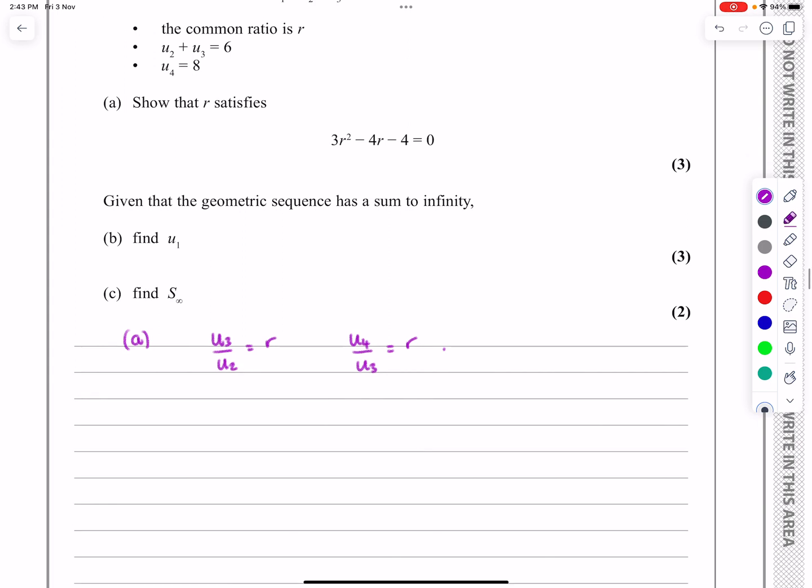They're also telling me that U2 plus U3 is equal to 6, and they're telling me that U4 is equal to 8. And with all that information, can I try and get to the stage where I've got this quadratic equation to be solved?